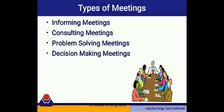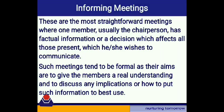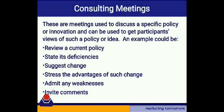There are four types of meetings. First are informing meetings — as the name suggests, these are conducted just to give information. They are the most straightforward meetings where one member, usually the chairperson, has factual information or a decision that affects all members present. These meetings tend to be formal, aiming to give members a real understanding and to discuss implications or how to put such information to best use.